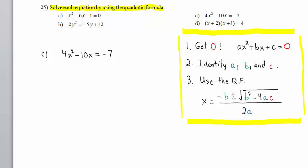There are three essential steps. First, you want to get zero. In other words, put the equation in standard form, pushing all terms to one side, getting zero on the other side. Secondly, identify the coefficients a, b, and c. You only do that after the equation is in standard form. Third, use the quadratic formula.